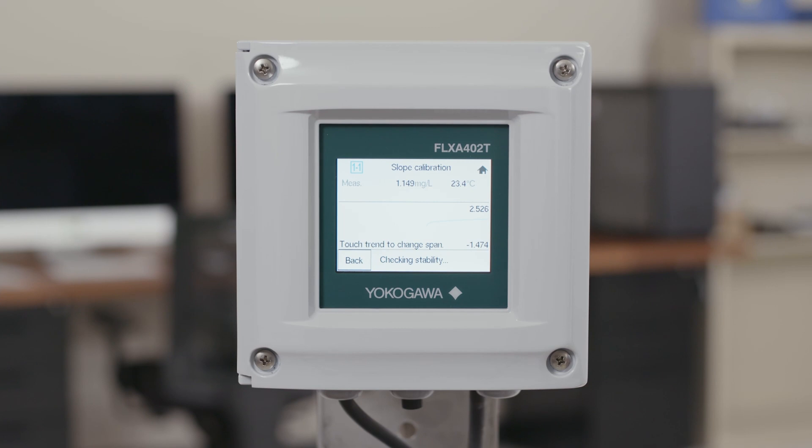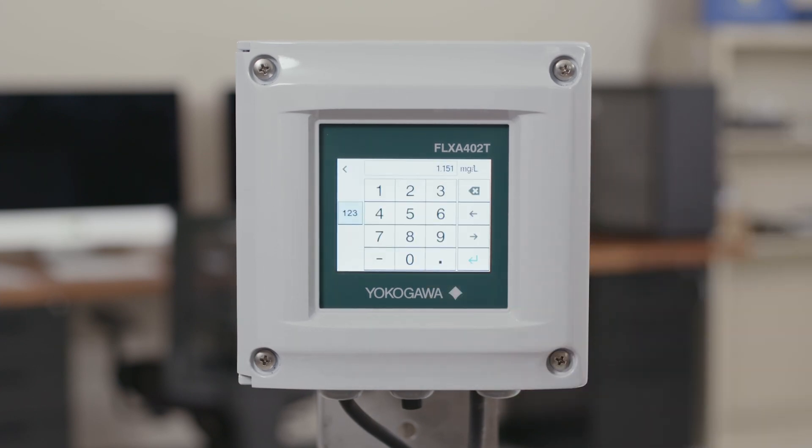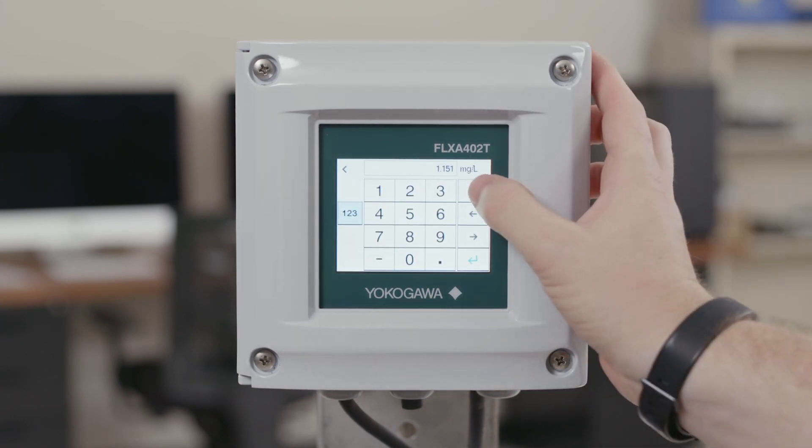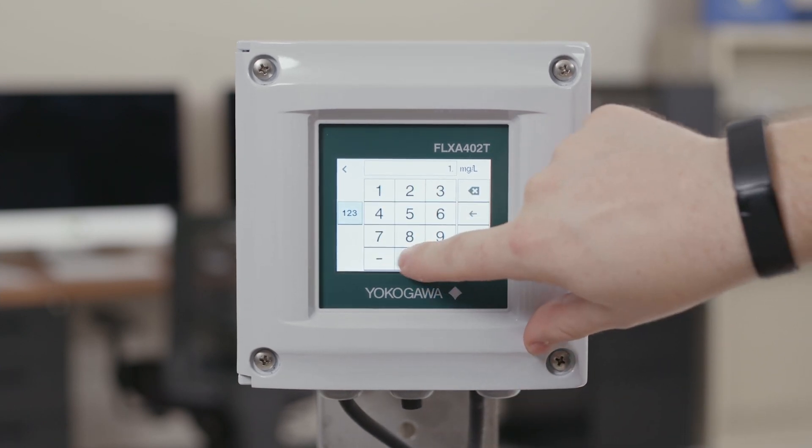This will allow the analyzer to make sure that you don't have any drastic changes in what you're measuring. If this is the case you'll see a next button appear and it will show your current reading and a cal point reading. In this cal point here you want to actually click on that and input what your handheld or your lab measurement was. This is your input of the actual value that it should be reading.